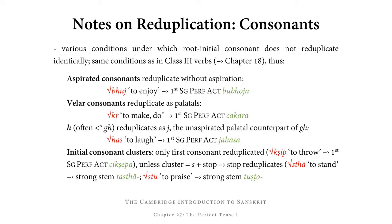As mentioned earlier, the formation of the reduplicative syllable isn't always straightforward, because there are various conditions under which root-initial consonants do not reduplicate identically. These conditions are the same as those found in class three verbs from chapter 18, so let's go over them. First of all, aspirated consonants reduplicate without aspiration. For example, from bhuj 'to enjoy,' we get the first singular perfect active bubhoja — bu is the reduplicative syllable, the unaspirated equivalent of bho, and bhoj is the root in guna, giving ending a.